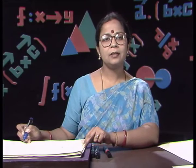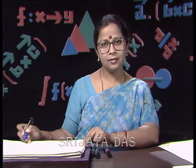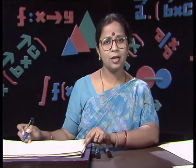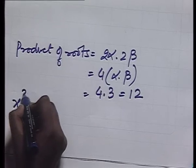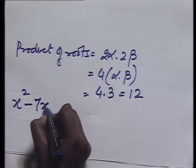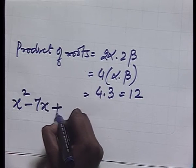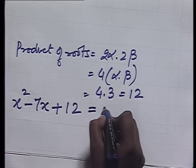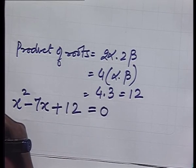So now we have the sum of roots of the required equation as 7 and the product as 12. Therefore, the required equation is x² - 7x + 12 = 0.